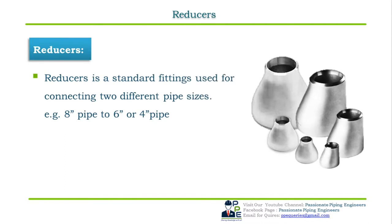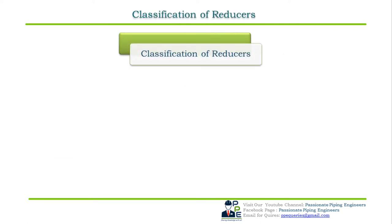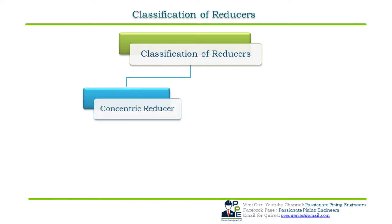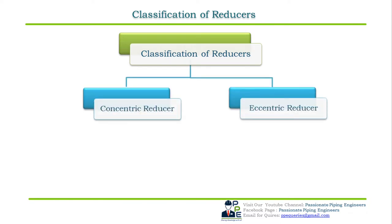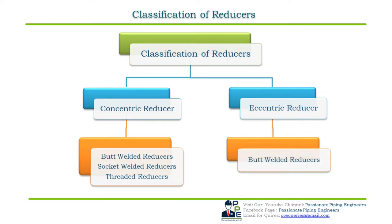Reducers are a standard fitting used for connecting two different pipe sizes or line sizes — for example, 8-inch NPS to 6-inch NPS or 4-inch NPS pipe. They are also used for changing pipe sizes to meet flow requirements. We have two types of reducers: concentric reducers and eccentric reducers. Concentric reducers are further classified as butt welded, socket welded, and threaded reducers.